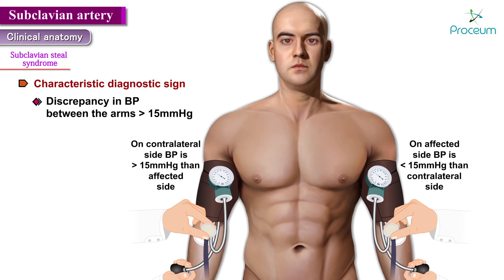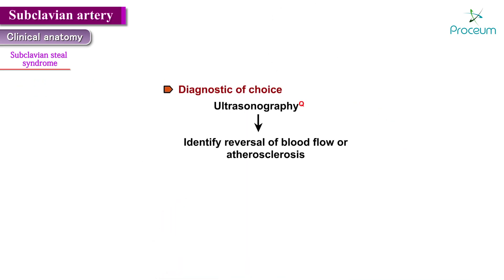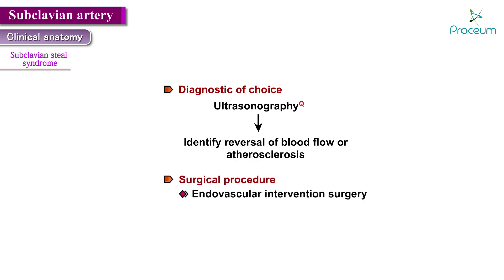Because the ipsilateral subclavian artery is occluded by atherosclerosis, blood pressure in the ipsilateral arm is gradually decreased compared to the contralateral side. The discrepancy between these pressures will be approximately greater than 15 mmHg, which is the diagnostic sign for subclavian steal syndrome. The imaging modality of choice is ultrasonography, which can identify reversal of blood flow or atherosclerosis to confirm the diagnosis. Endovascular intervention or surgery are used to treat symptomatic cases.